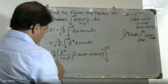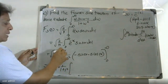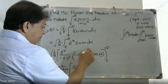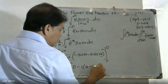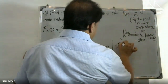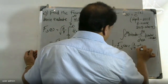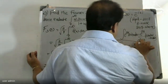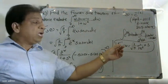Applying the limits from 0 to infinity, and simplifying, we get: root of 2 by pi, into 1 by (1 plus s squared), times s. Therefore, the Fourier sine transform F_s(s) = root of 2 by pi into s by (1 plus s squared).